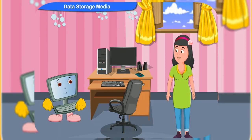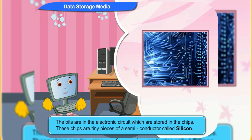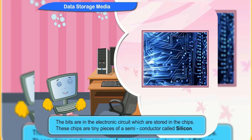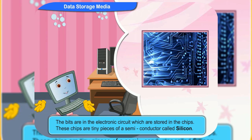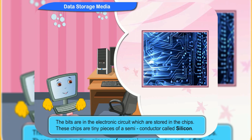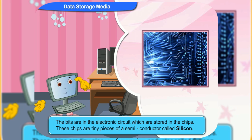Where are these bits found in the computer? The bits are in the electronic circuits which are stored in the chips. These chips are tiny pieces of semiconductor called silicon. Millions of circuits are assembled on each chip.